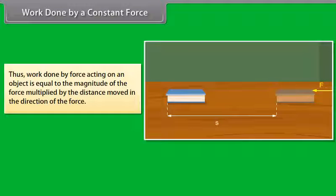Thus, work done by force acting on an object is equal to the magnitude of the force multiplied by the distance moved in the direction of the force.